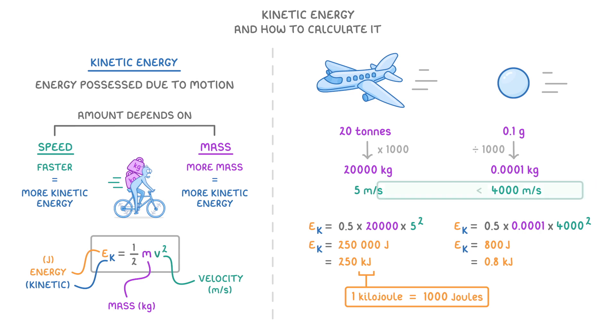So even though the particle was travelling much faster, it still had less kinetic energy because its mass was so much lower.